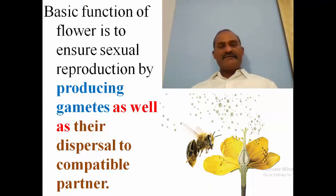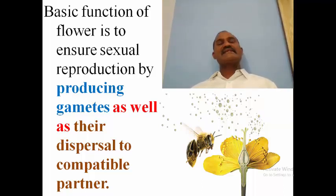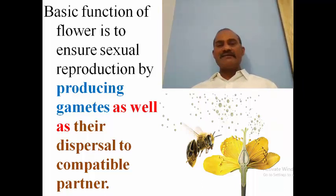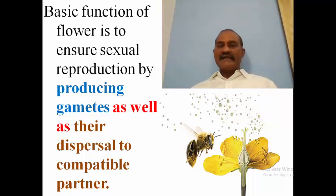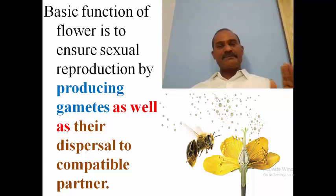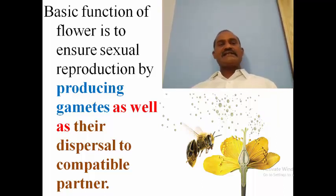The basic function of a flower is to ensure sexual reproduction — by producing gametes as well as their dispersal to a compatible partner. Both male and female parents are involved in producing gametes, and these gametes must come together. In angiosperms, the female gamete is non-motile and the male gamete is also non-motile, but by using some mechanism it is dispersed and sent to the female gamete for successful fertilization.